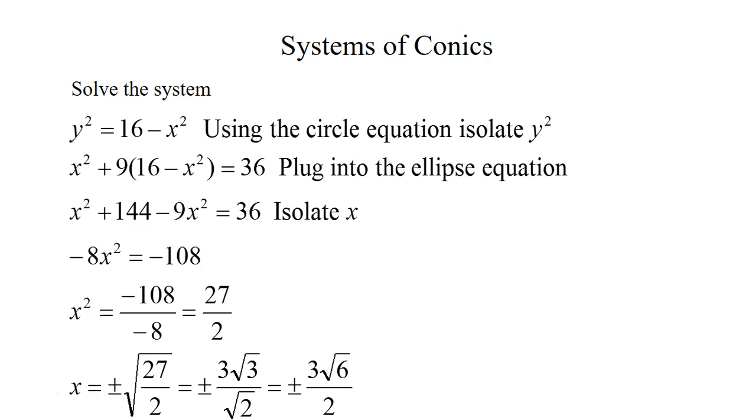So isolating x², we get 108/8 or 27/2. And then taking the square root, we're going to have 2 solutions, one positive and one negative. And I just rationalize the denominator. So we have ± 3√6 / 2 are two solutions for x.